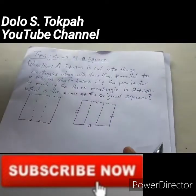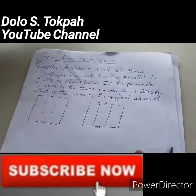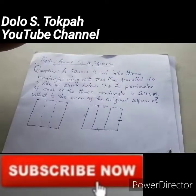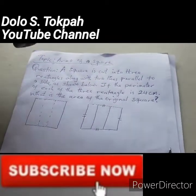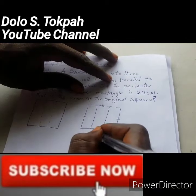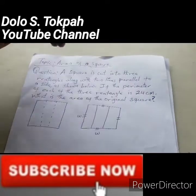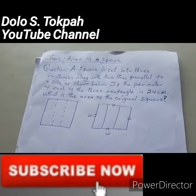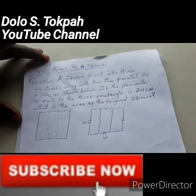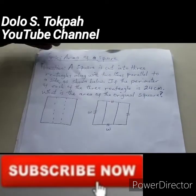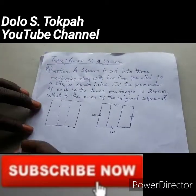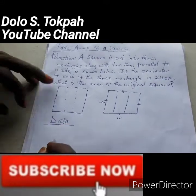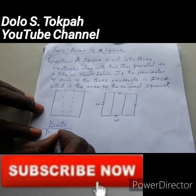To make our work easier, we need a variable common to each rectangle. We are going to use the variable W to represent the width of the rectangle. You can see W here and W here in the diagram. Now let us set up our data. The perimeter given in the problem for each rectangle is 24 centimeters.